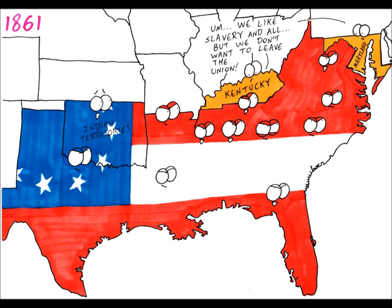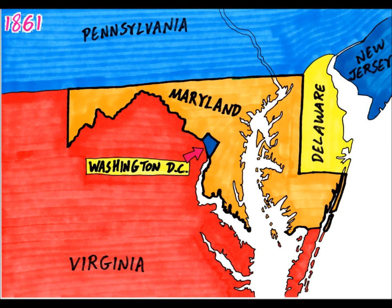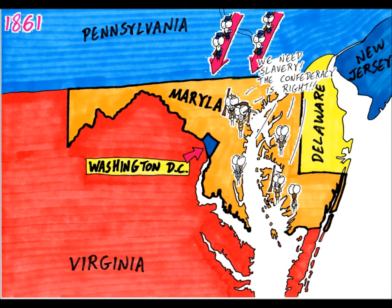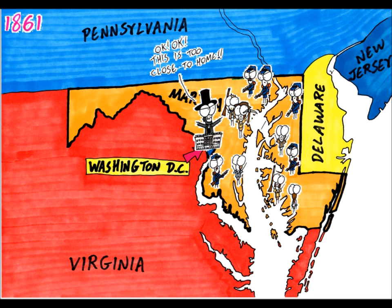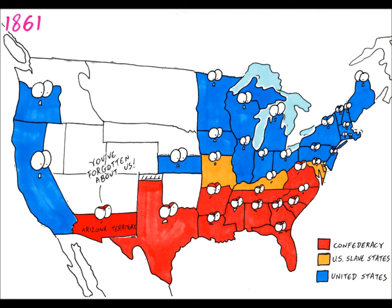Other border states — Maryland, Kentucky, Delaware, and Missouri — were slave states, but were against both the South's secession and fighting against the South, so they tried to remain neutral. As Union soldiers from the North moved towards Maryland, anti-Lincoln protesters rioted. Lincoln declared martial law in Maryland, and Union naysayers were imprisoned, otherwise Washington DC could be surrounded by Confederate states. Feeling forgotten by the Union, the Arizona Territory seceded and later joined the Confederacy.